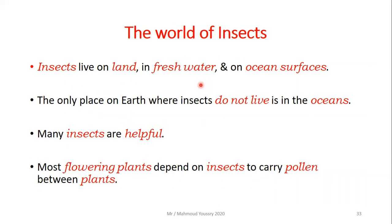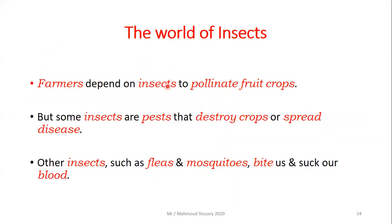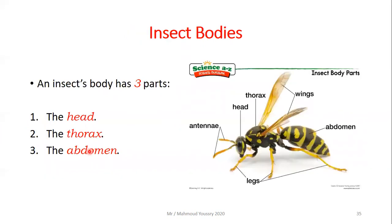Insects live on land, in fresh water, and on ocean surfaces — the only place they do not live is in the ocean itself. Many insects are helpful: most flowering plants depend on insects to carry pollen, and farmers depend on them to pollinate fruit crops. But some insects are harmful pests that destroy crops, spread disease, or bite and suck blood.